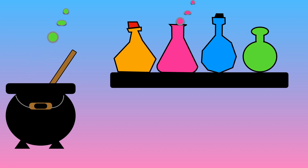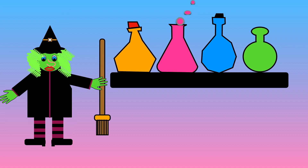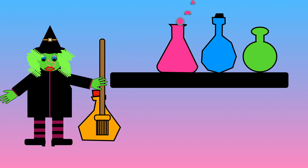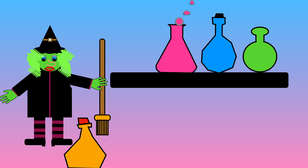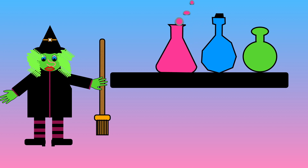Four potions are on the shelf. The witch takes one away. How many potions are left? One, two, three. There are three potions left. One less than four is equal to three.